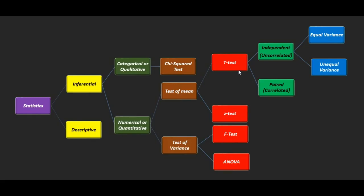Inside t-test we have the independent type and the paired type. Inside the independent t-test we have equal variance and unequal variance. We will try to understand each and every part of t-test with a very simple example.